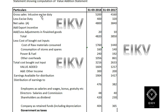Starting with gross sales, which is directly given in the question, we deduct excise duty of 400 and 420, which gives net sales. After computing net sales, we add export incentive — however, no export incentive is given in this question.